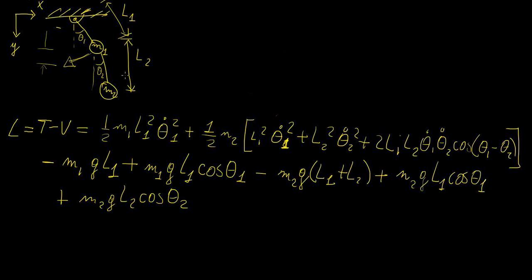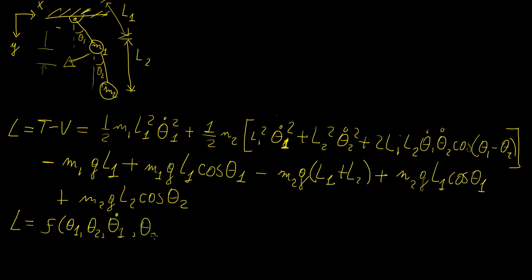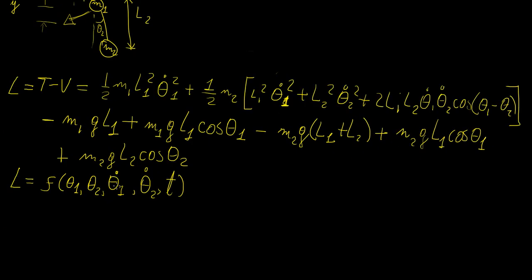We're going to continue with the double pendulum problem and we left off at this Lagrangian. We found the Lagrangian for the full system including the two bodies, and now we're going to find the other Lagrange equations. The Lagrangian is a function of theta1, theta2, theta1 dot, theta2 dot, and t — every one of these variables is a function of time. So we have a function of five variables, and we need two Lagrange equations applied to this.